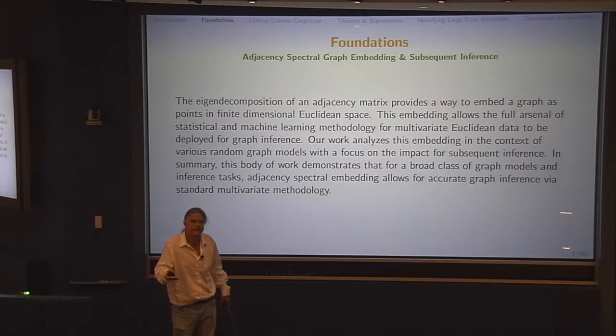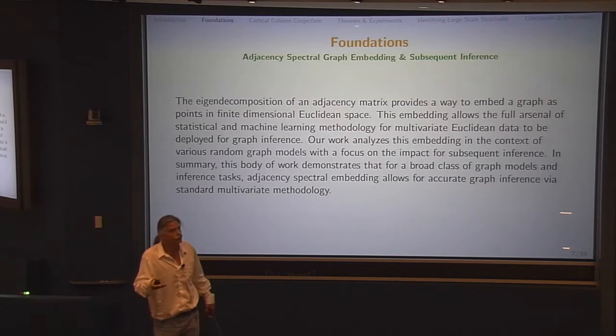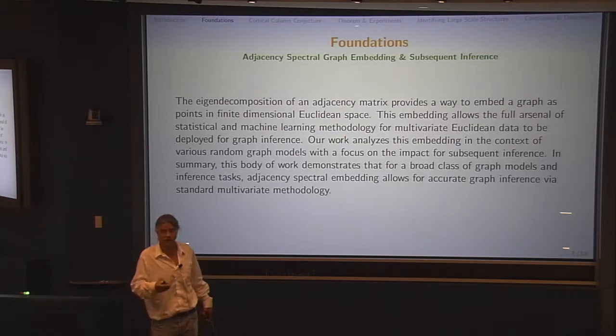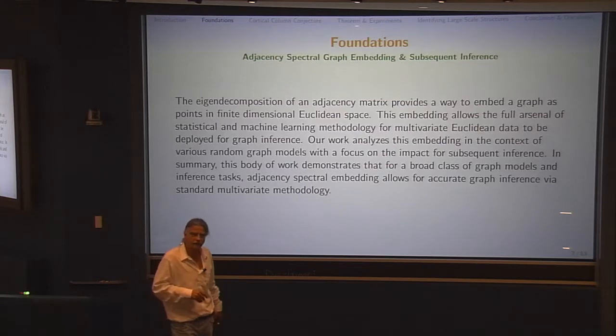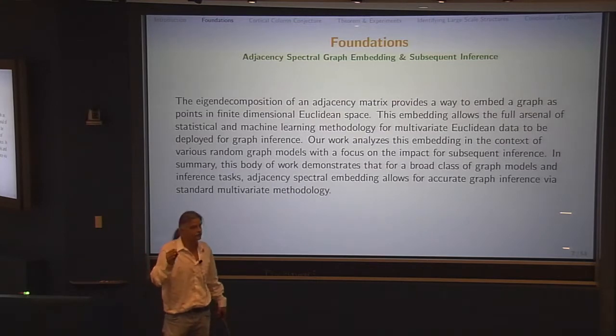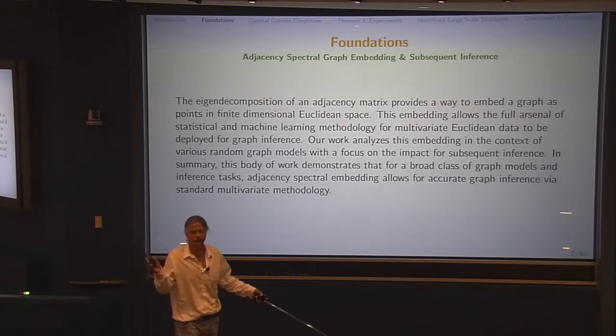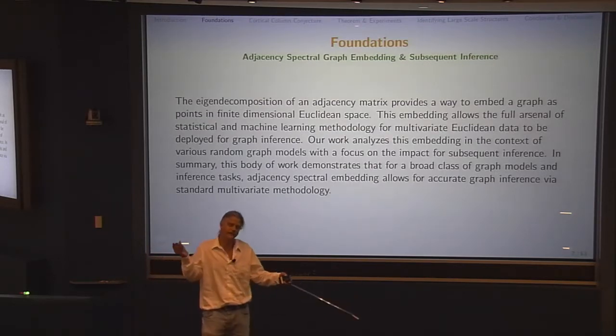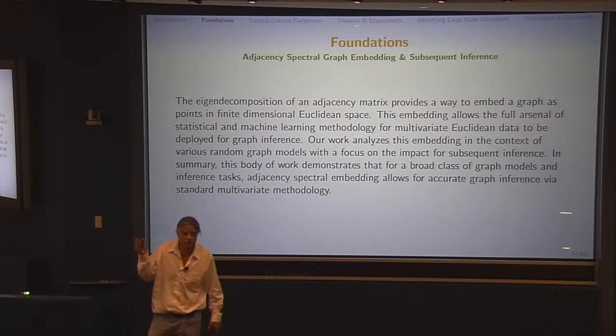We don't know the distribution. So what happens is we use training data. Now we have x, y as before, but now we also have x_i, y_i, iid from f(x, y). We observe those feature vector class label pairs. Now we're trying to classify the observation x for which we have not observed the class label. That's standard statistical pattern recognition. Or at least it was before my hair turned gray. Now it's machine learning.